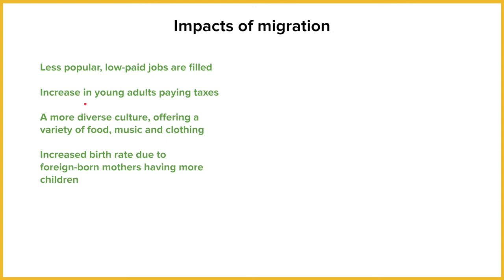There's a more diverse culture offering a variety of foods, music, clothing, and other things that migrants will bring with them. The UK has always been a melting pot of cultures — it brings variety to our island, and that's always been seen as a positive. There's also an increase in birth rate due to foreign-born mothers having more children. This is good because when those children reach the age of 18, they will become contributing members of our economy and pay taxes, which is going to improve our country over time.